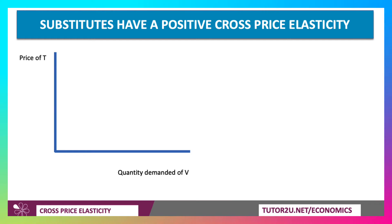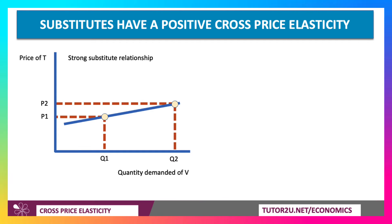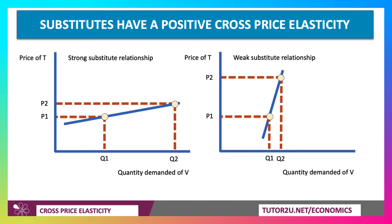A quick look at the diagram for substitutes — they have a positive cross-price elasticity. On the y-axis, the price of product T; on the x-axis, the quantity demanded for good V. In the first diagram, there's a strong substitute relationship: a small increase in the price of good T leads to a significant increase in the demand for V — a lot of switching taking place. In the second diagram, a weaker substitute relationship: a big increase in the price of T leads to only a relatively small increase in the demand for V. Both have a positive cross-price elasticity, but the left diagram shows a strong effect and the right shows a weak effect.